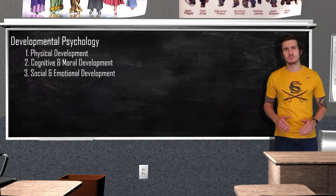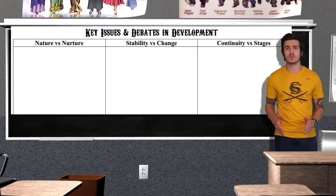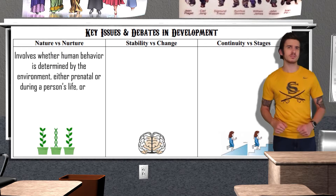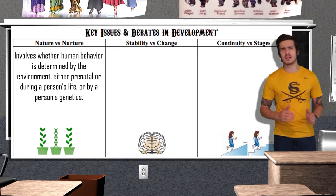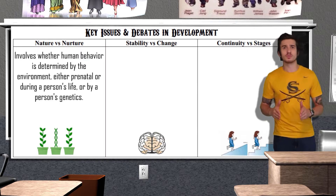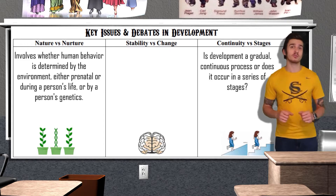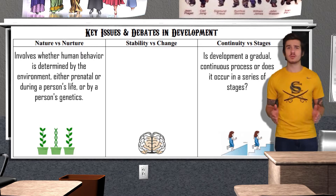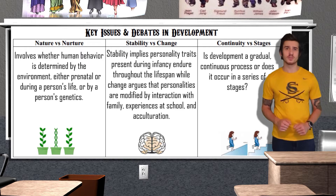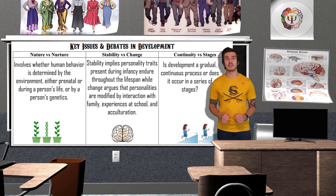Before we get into all the theories of development, it is important to note some major arguments psychologists have regarding our development. The nature versus nurture controversy looks at whether genetics or environment more influences development. Psychologists today generally agree both play important roles, but debate which is more influential. We also have continuity versus stages — whether development is gradual cumulative change or a sequence of distinct stages. Our third controversy is stability versus change: whether personality traits present during infancy last throughout the entire lifespan.